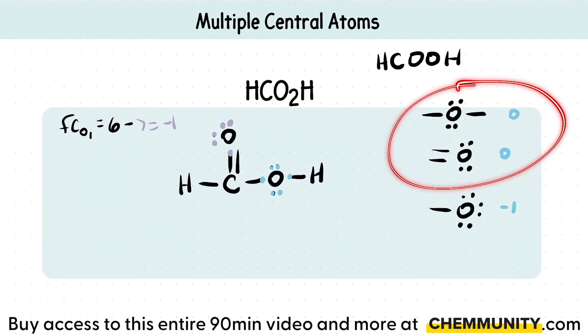This one should make sense that they both have a formal charge of zero because there's two bonds here. And then this is a double bond. There's two lone pairs. There's two lone pairs here. So I want you to start getting quick at this and just being able to quickly find and spot the formal charges.